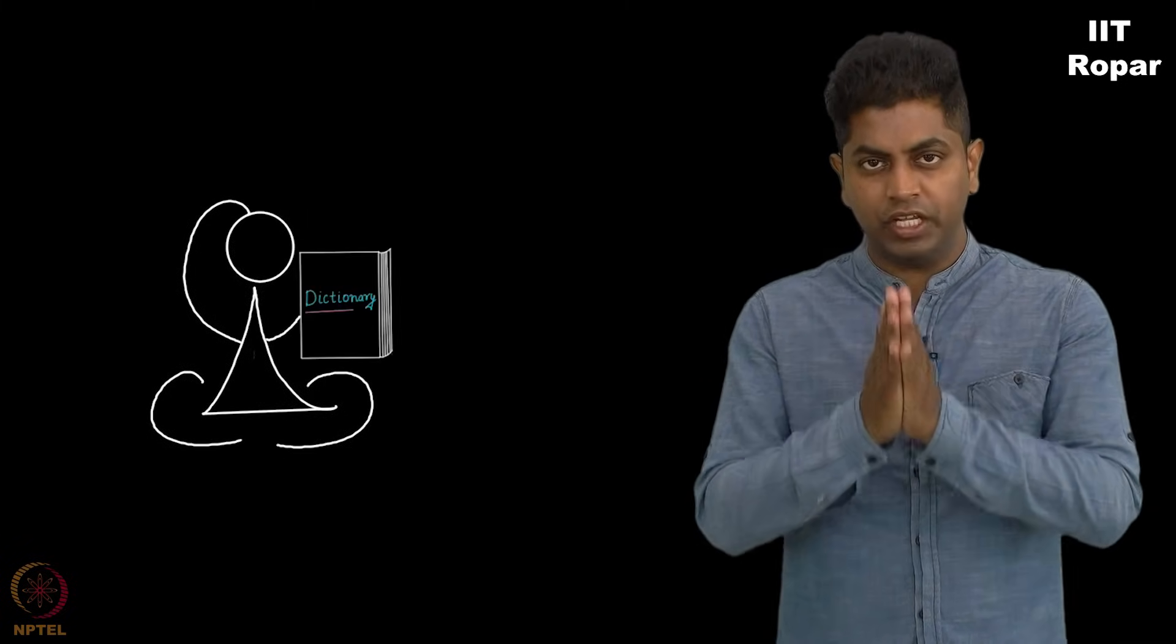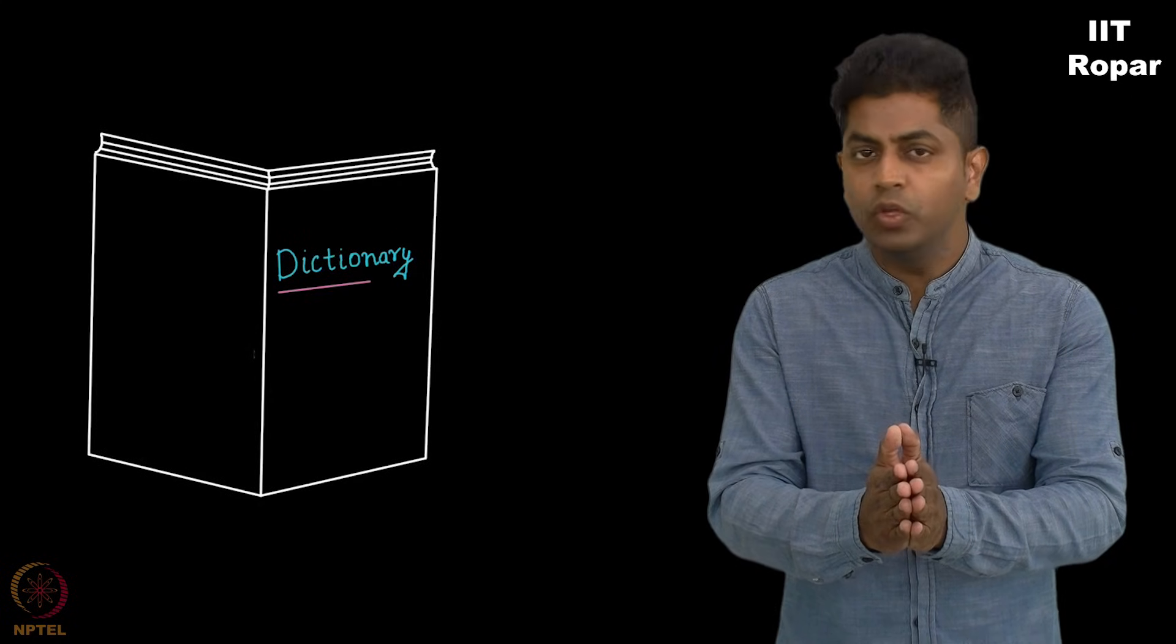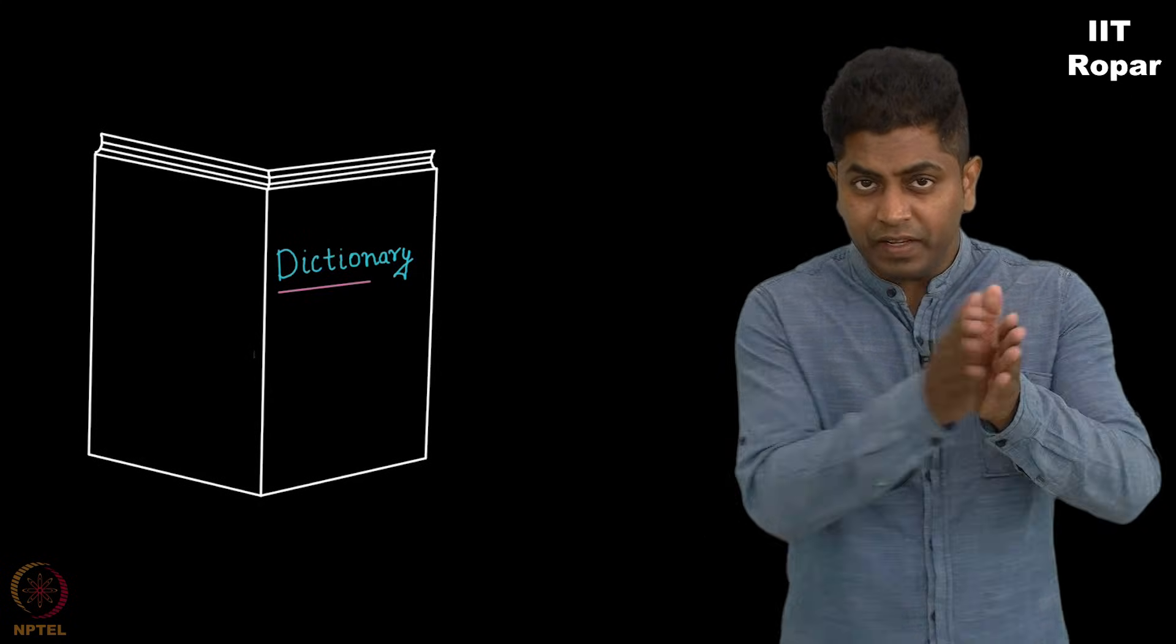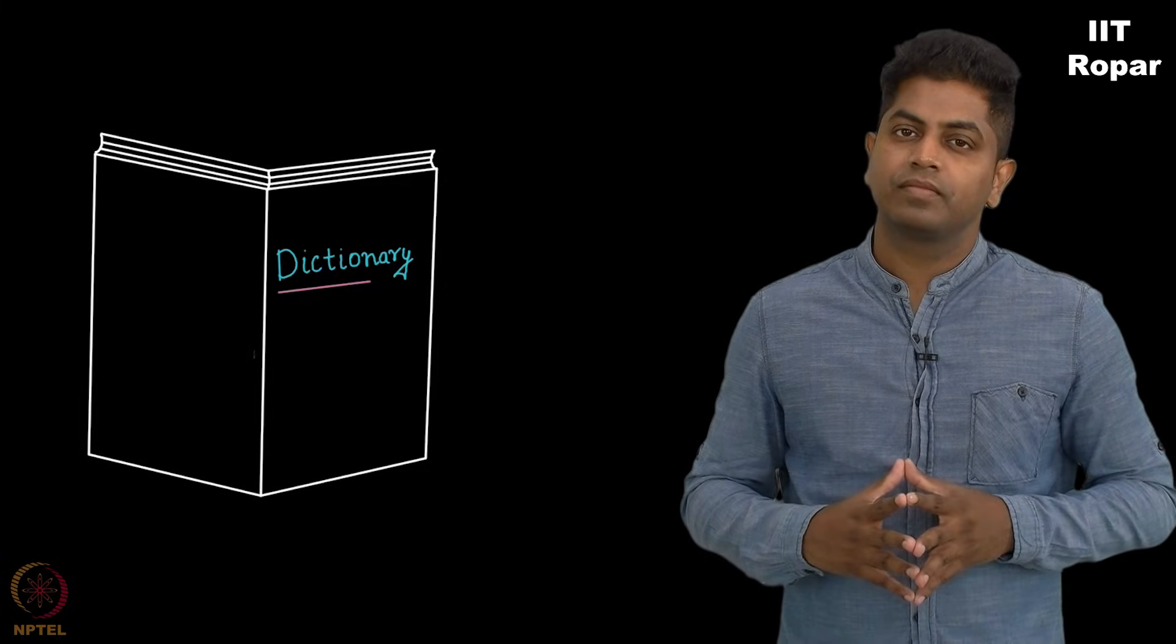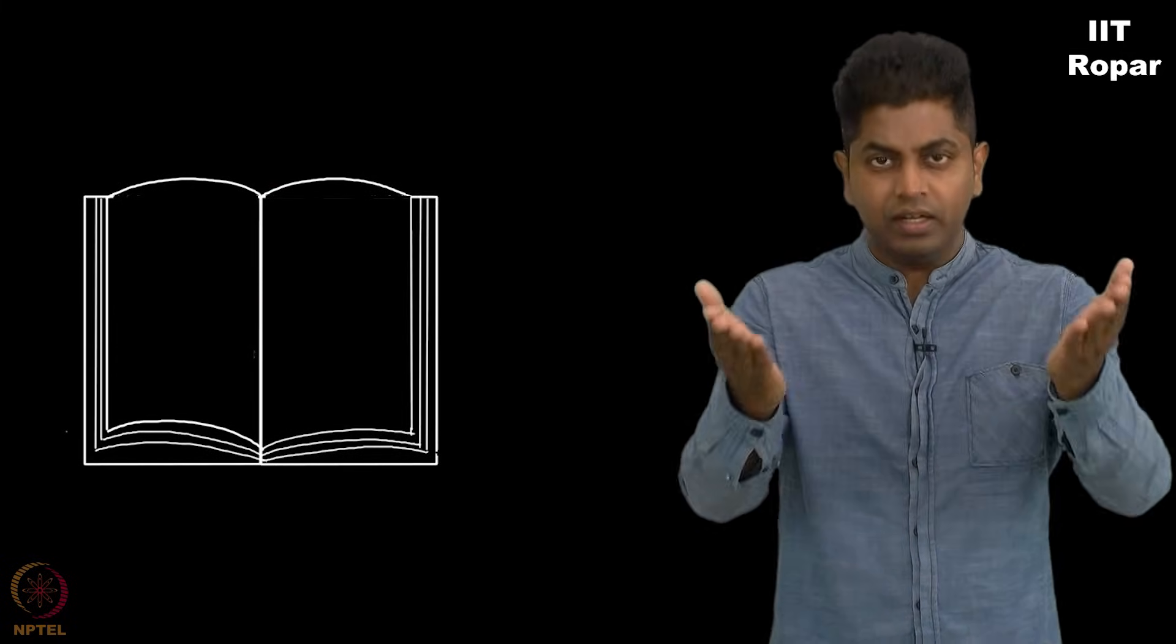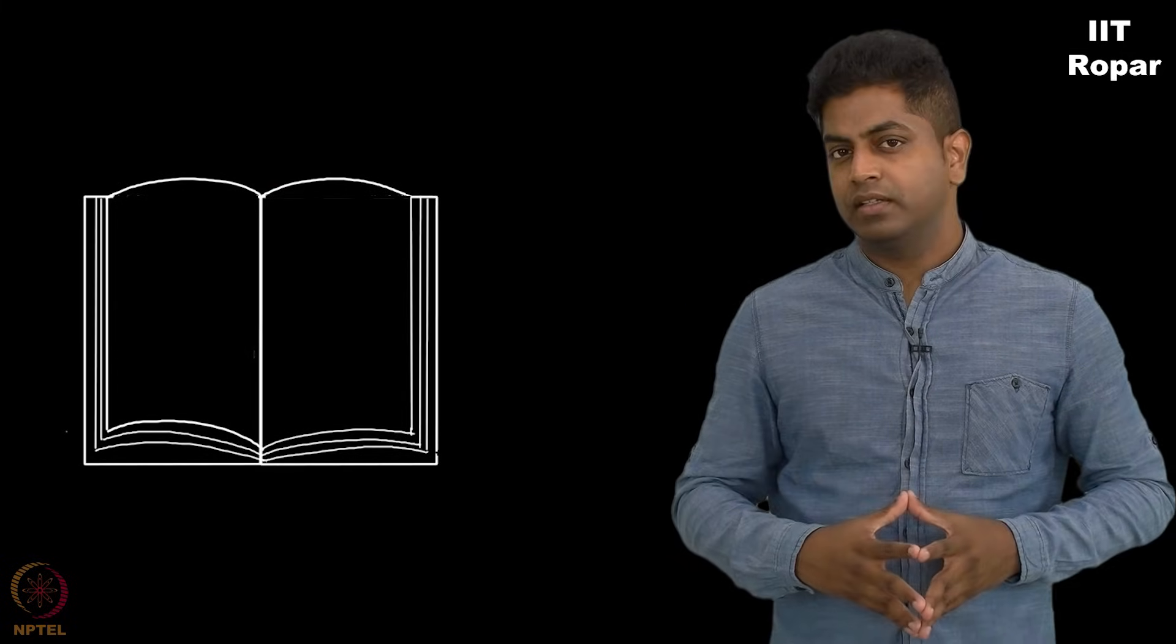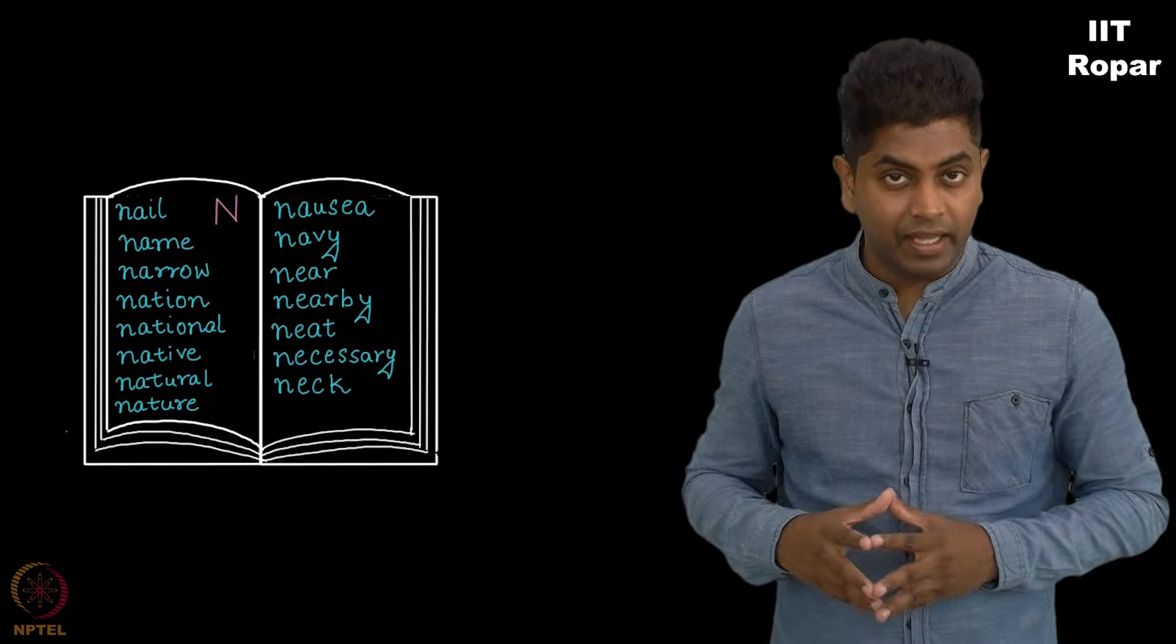You will open the dictionary in the middle. Why middle? You do not know that proclaim is in the first half of the dictionary or the second half of the dictionary. The moment you open the dictionary in the middle, you will get words starting from n, letter n.